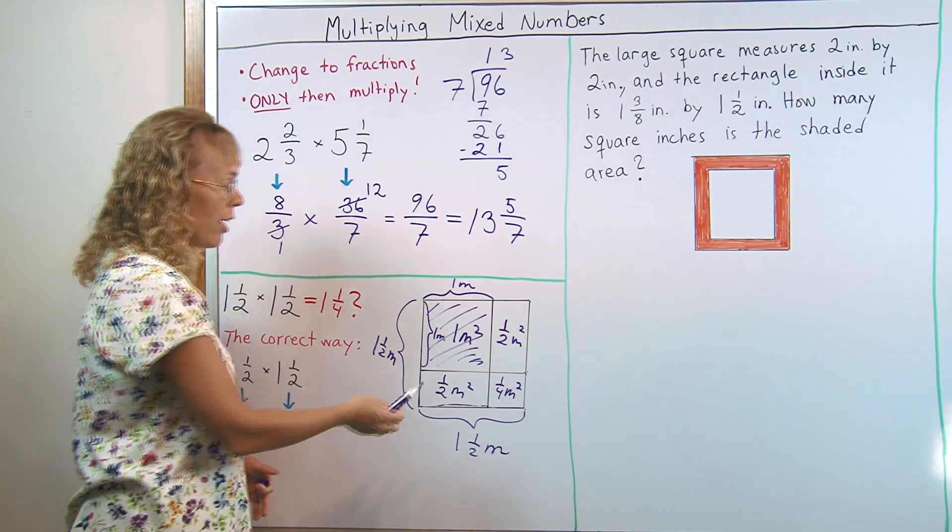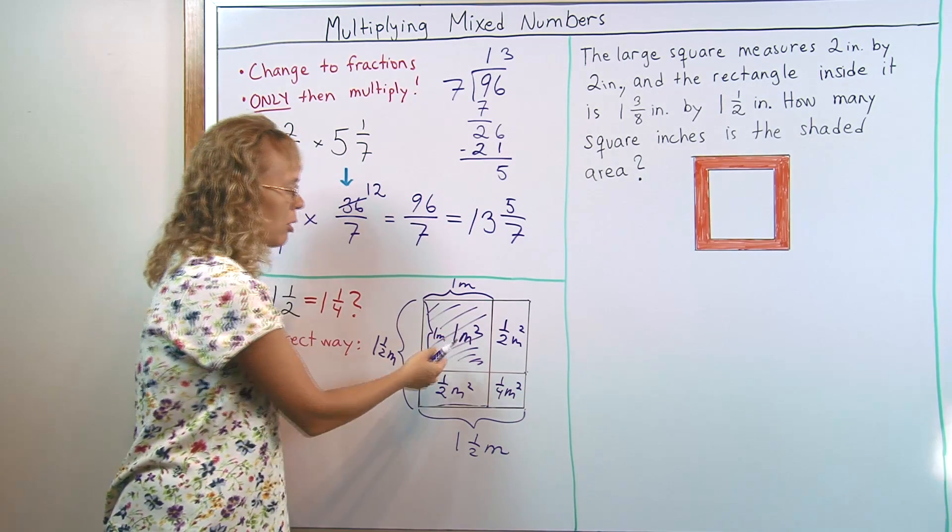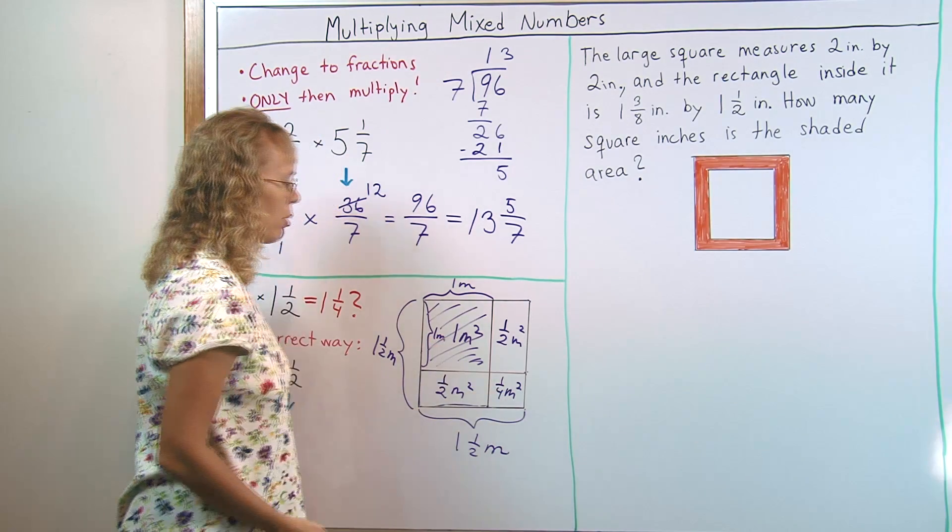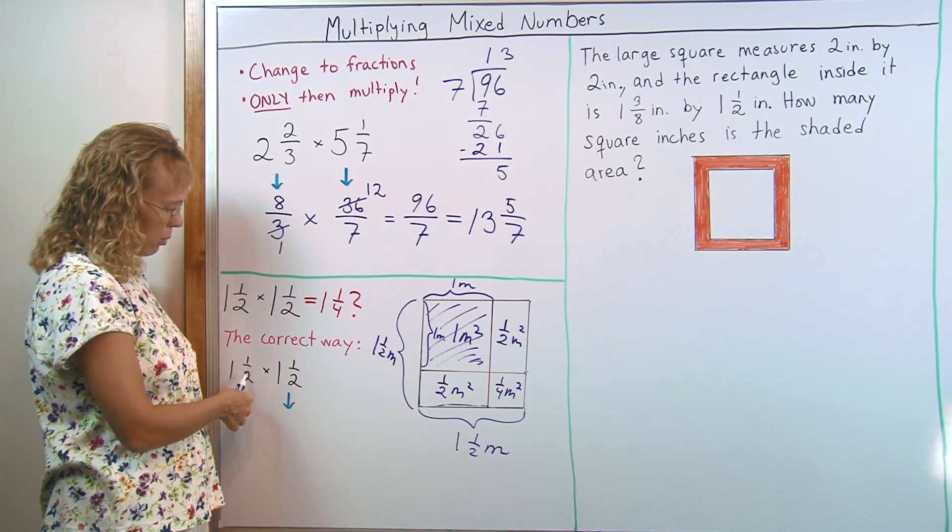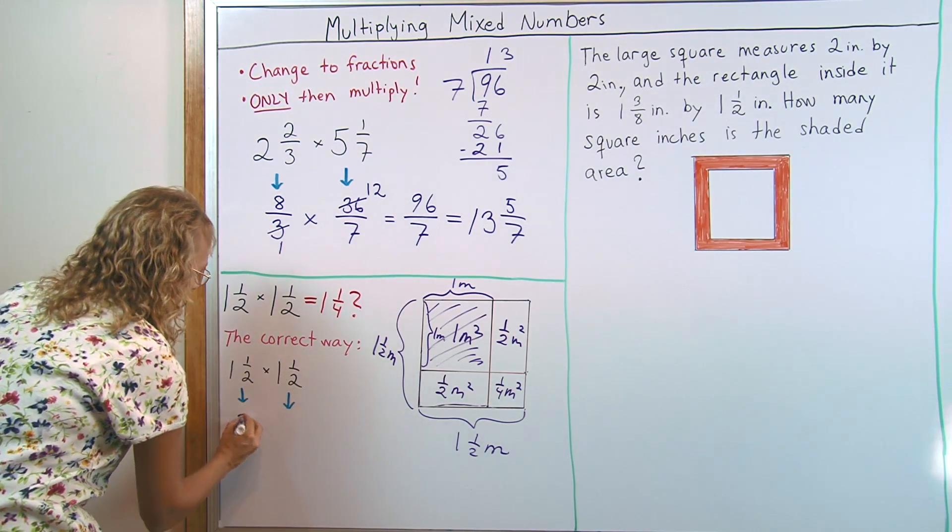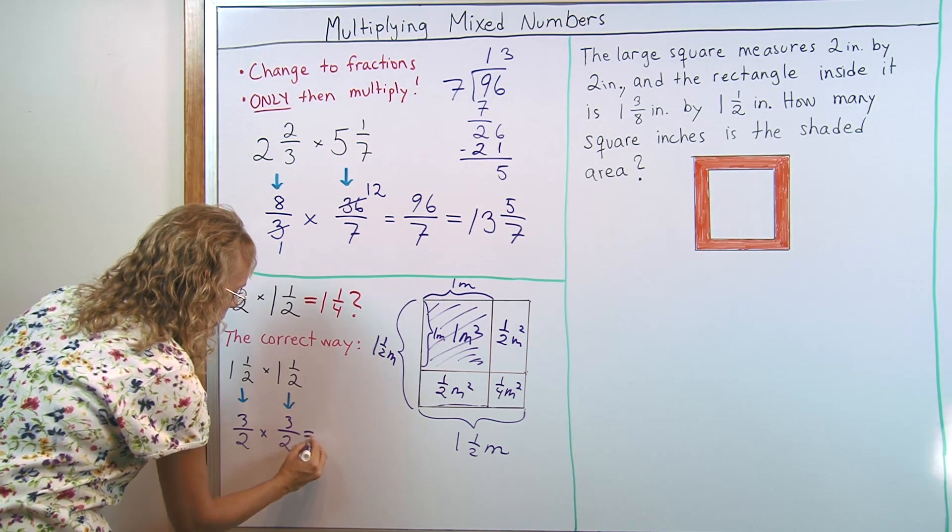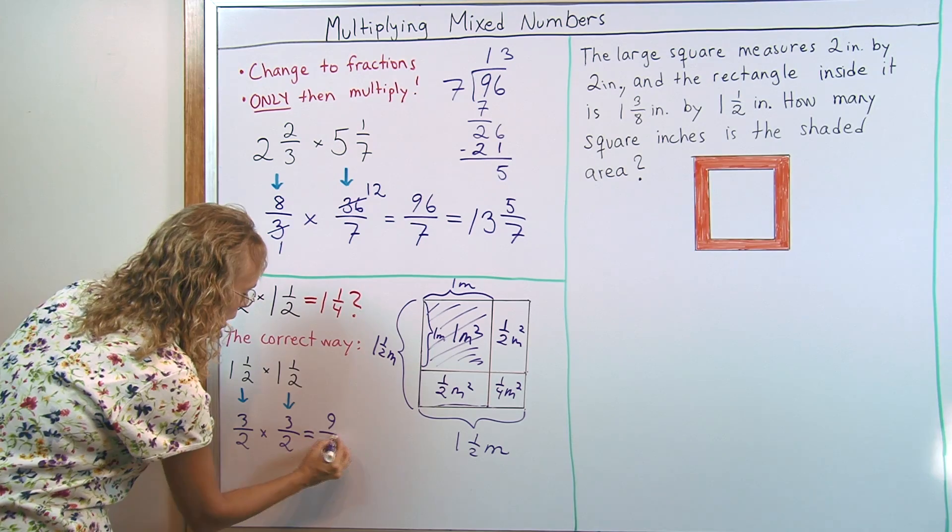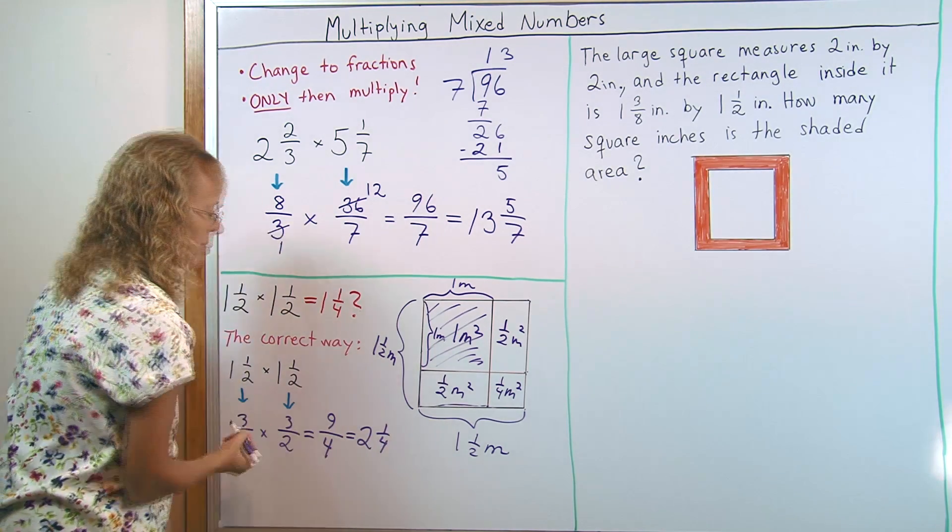So, in total, our area would be, these two make a square meter. There's another square meter. So we have 2 and 1 fourth square meters. And we will also get the same if we change these to fractions first. This is 3 halves times 3 halves. Now we multiply top 9 and bottom 4, which is 2 and 1 fourth.